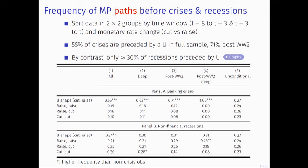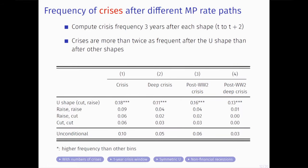Looking forward — conditional on a shape over an eight-year period — what is the crisis probability in the next three years? After a U-shape, there is roughly a 20% probability of having a systemic banking crisis, which is roughly double the unconditional probability and much higher than for other shapes, with statistically significant differences. This result is robust to different crisis definitions, time windows, and other checks.